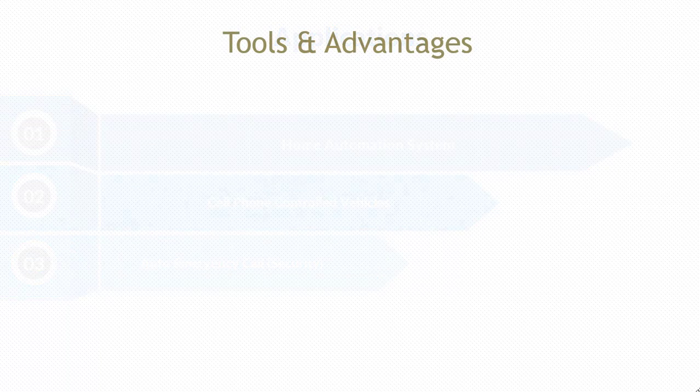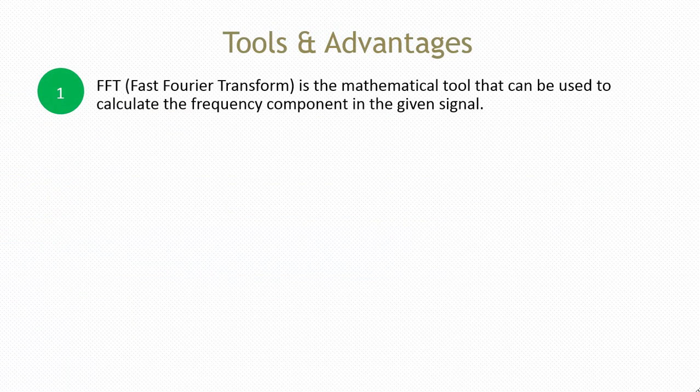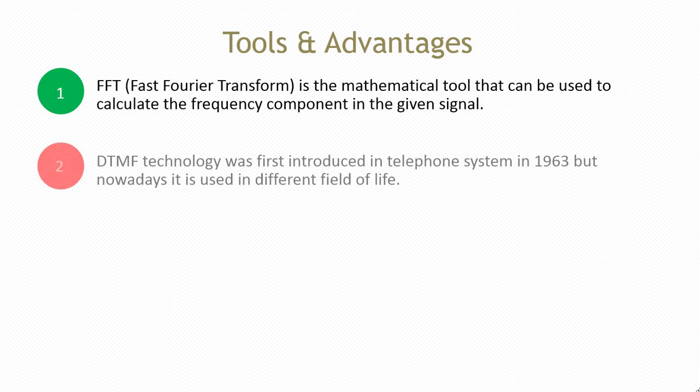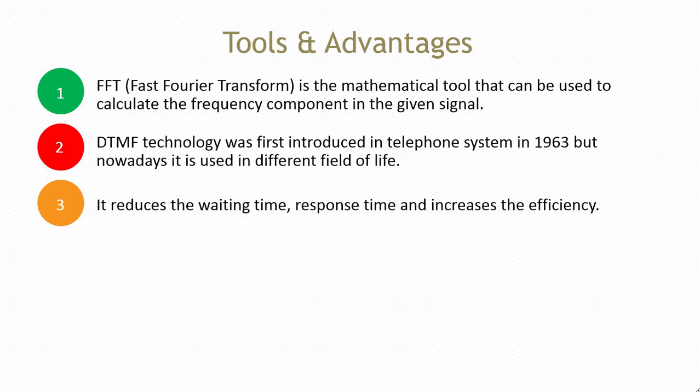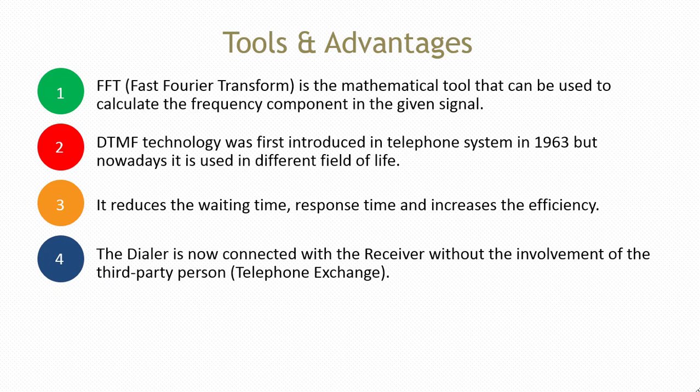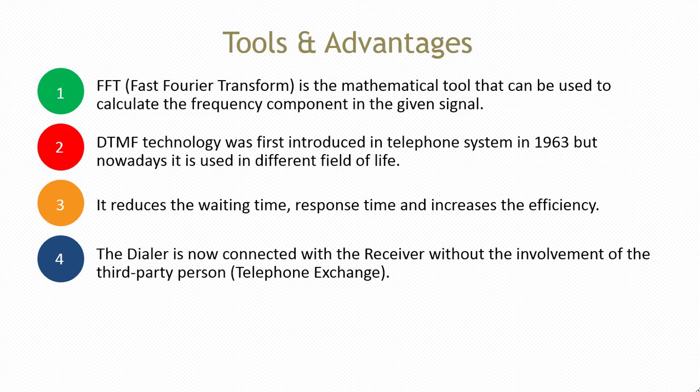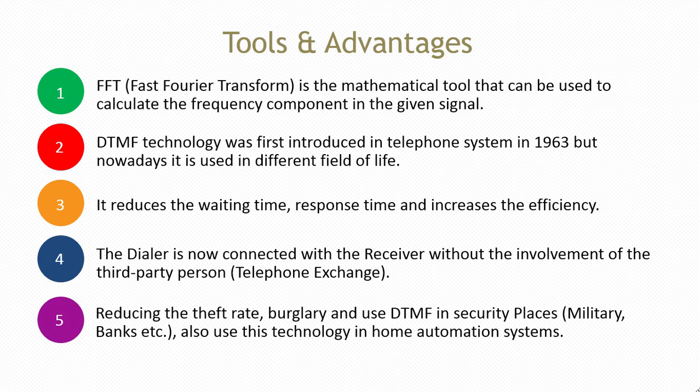Tools used and advantages of DTMF: FFT (Fast Fourier Transform) is the mathematical tool that can be used to calculate the frequency component in the given signal. DTMF technology was first introduced in telephone systems in 1963, but nowadays it is used in different fields of life. It reduces the waiting time, response time, and increases efficiency. The dialer is now connected with the receiver without the involvement of a third-party person (telephone exchange).